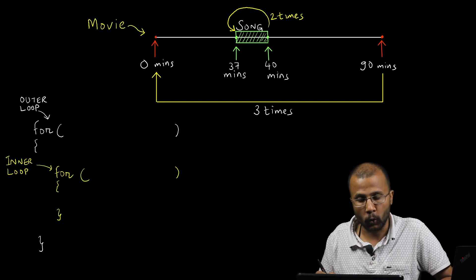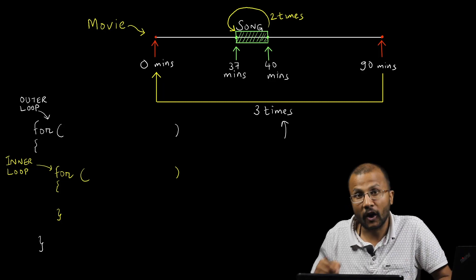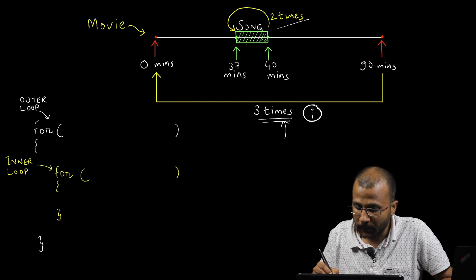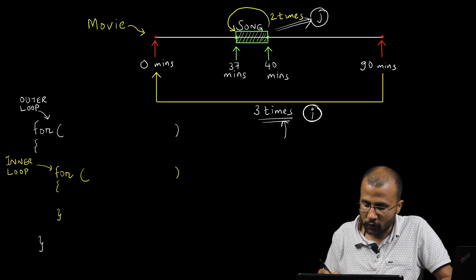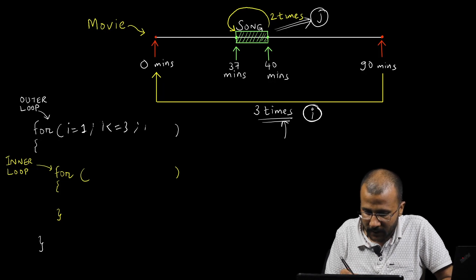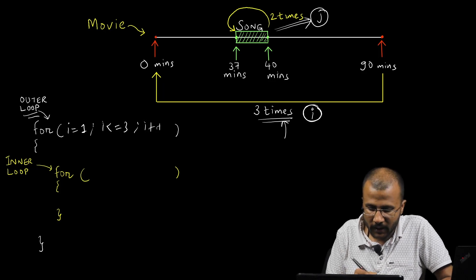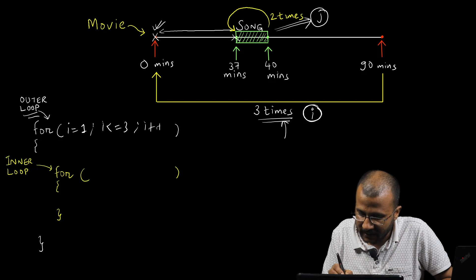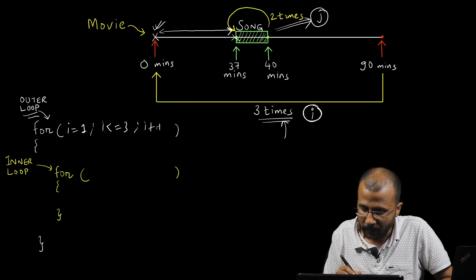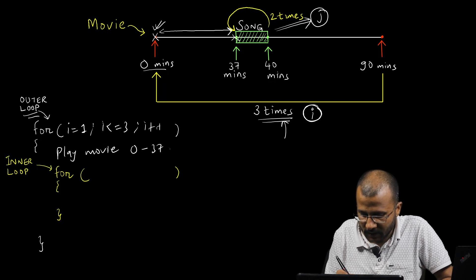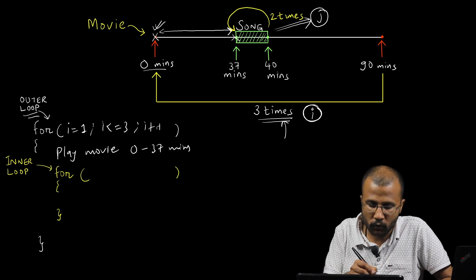Now let's put this scenario into code. The outer loop will run three times, controlled by variable i. The inner loop plays the song, controlled by variable j. The outer loop: i equals 1, i less than or equals to 3, i plus plus. Inside the body, we first write: play movie from 0 to 37 minutes.